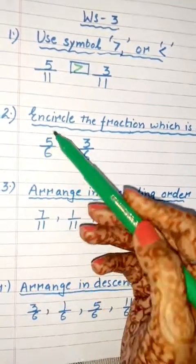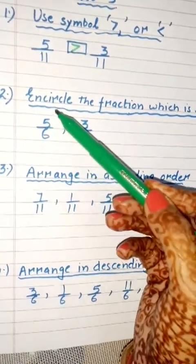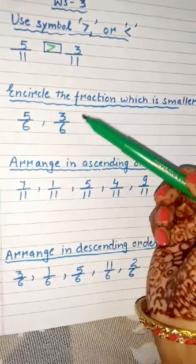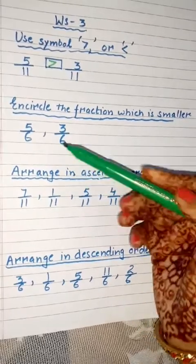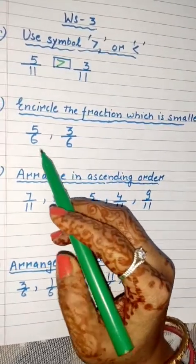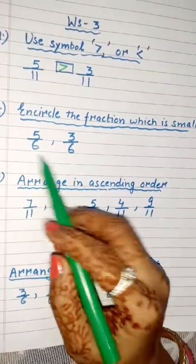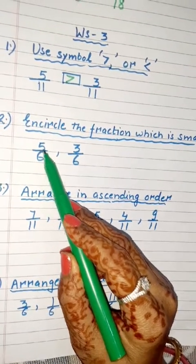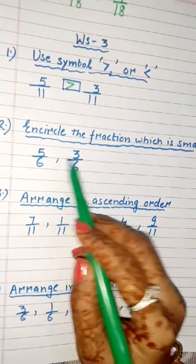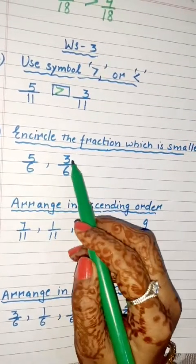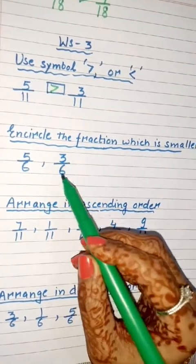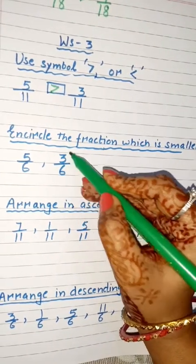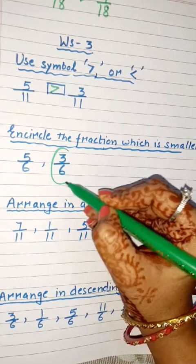Now question 2: encircle the fraction which is smaller. Again we have like fractions, so we compare their numerators — 5 and 3. The smaller numerator is 3, so we circle the smaller fraction, which is 3/6.